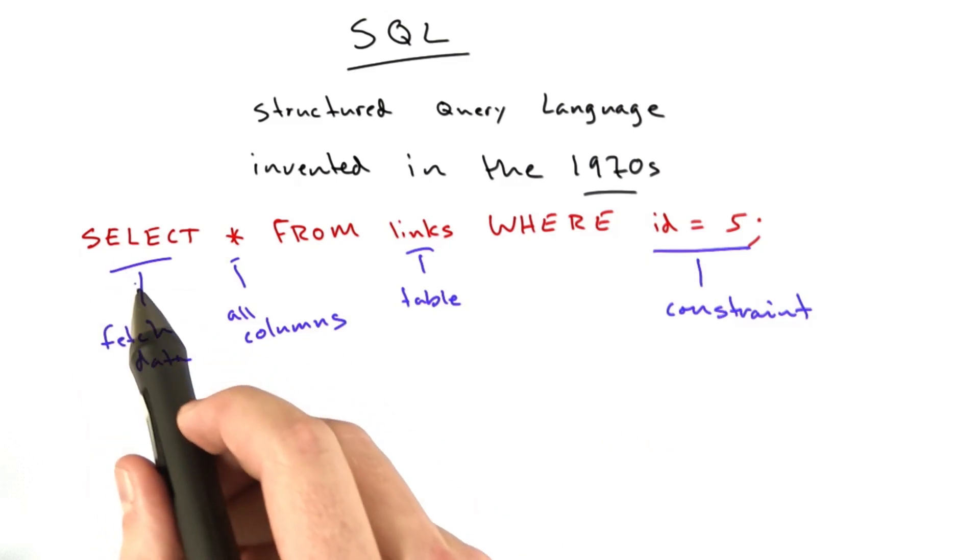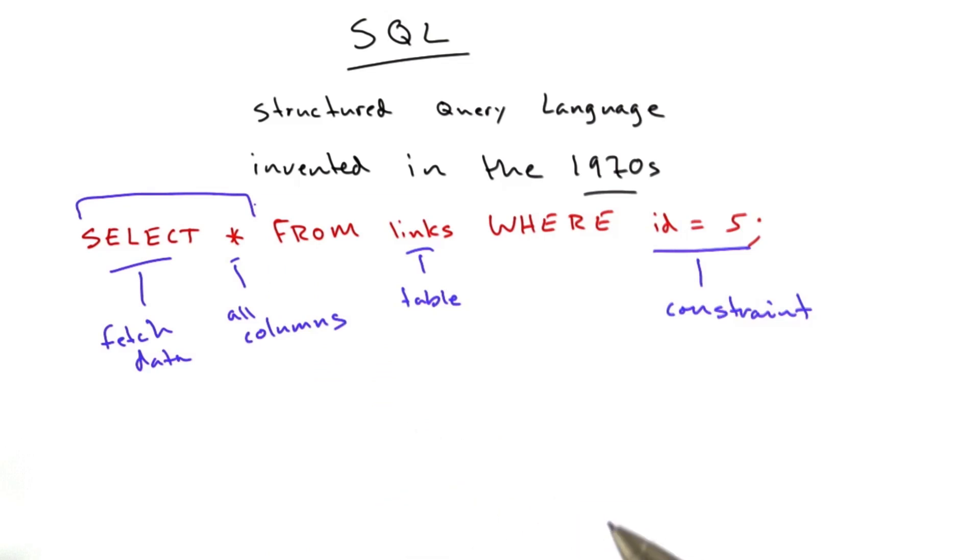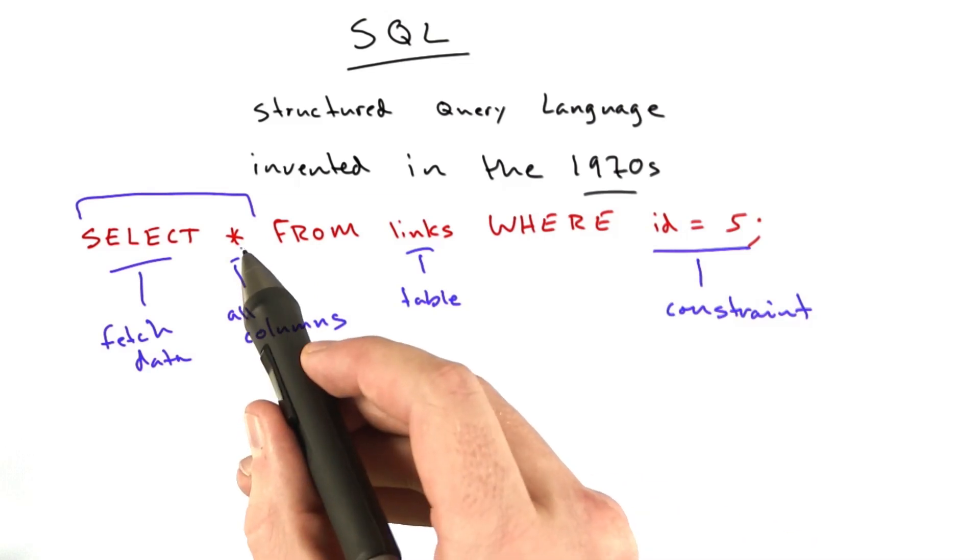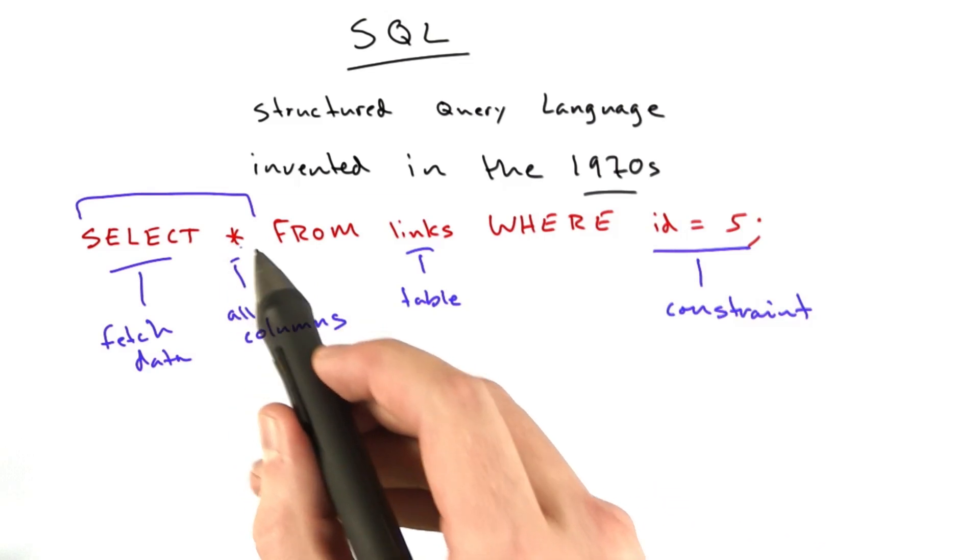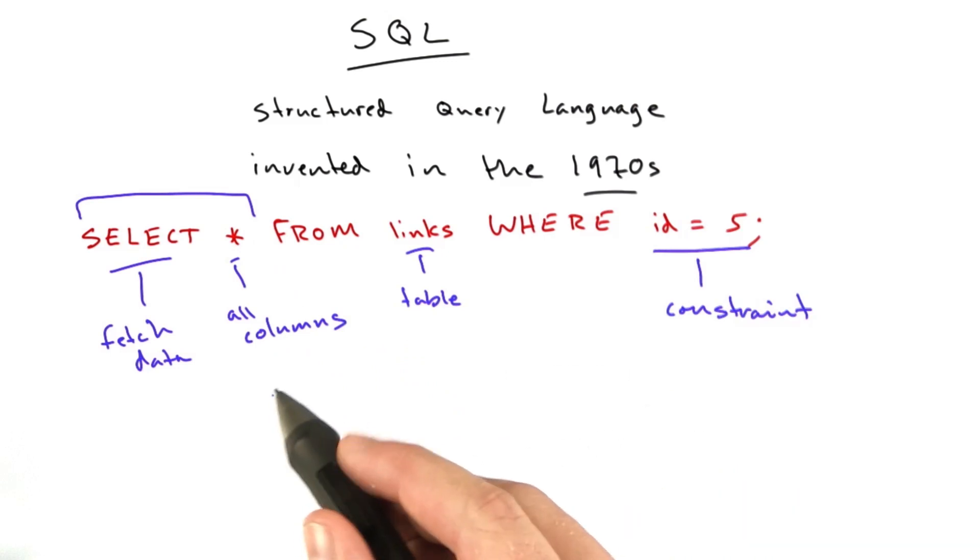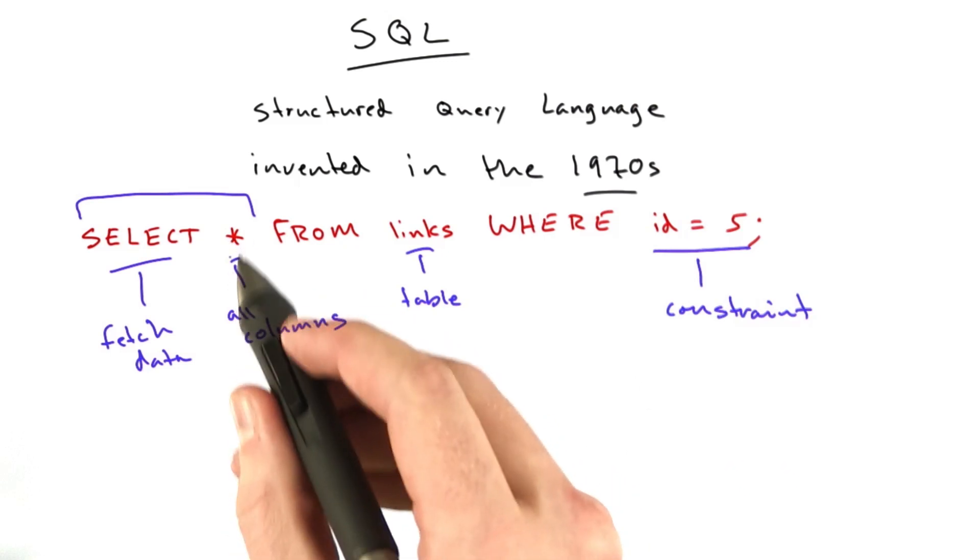There are a couple parts of this line that are relevant. This first section, the select star, this is basically what we're selecting. The star can, instead of being a star, it can actually be a list of columns. But for a lot of things we're going to be doing, we'll be selecting all of the columns.